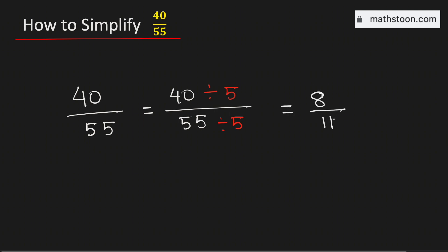8 over 11 cannot be simplified further because the only common divisor of 8 and 11 is 1. So 40 over 55 simplified is equal to 8 over 11, and this is our final answer.